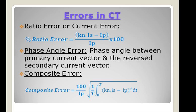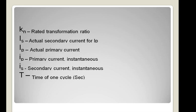Number two is phase angle error. It is defined as the phase angle between the primary current vector and the reversed secondary current vector. Number three is composite error. It is defined as the RMS value of the difference of (KN × IS − IP) integrated over one cycle under steady condition, where KN is the rated transformation ratio, IP is the instantaneous primary current, IS is the instantaneous secondary current, and T is the time of one cycle in seconds.